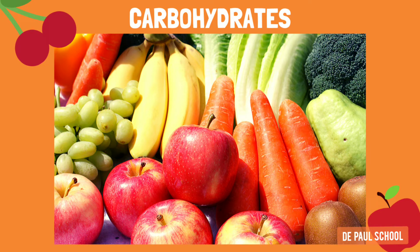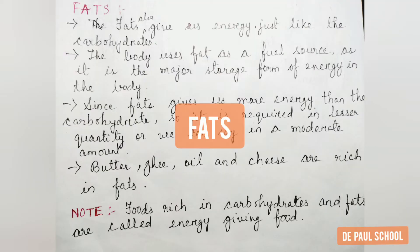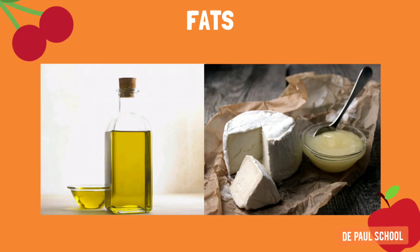Carbohydrates are highly needed by laborers and those who do physical work. The next component of food is fats. Fats also give us energy, just like carbohydrates. The body uses fat as a fuel source, as it is the major storage form of energy in the body. Since fats give us more energy than carbohydrates, it is required in a moderate amount. Few examples of food items that have fats are butter, ghee, oil, cheese, etc. Foods rich in carbohydrates and fats are also called energy-giving food.